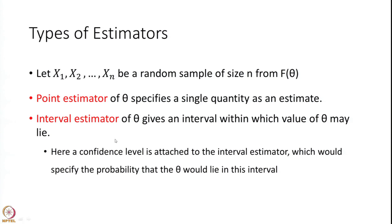This probability attached to the interval is called a confidence level of the interval estimator. For example, we can say that theta will lie in the interval between minus 3 and plus 3 with a probability of 95 percent, or theta will lie between minus 4 and 4 with a probability of 68 percent. You can have an interval estimator with a different level of confidence, but this probability is to be derived.